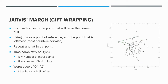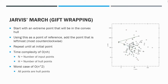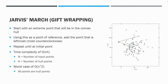For Jarvis's March, you're going to start with an extreme point that will be in the convex hull — in the GIF on the right, it starts with the leftmost point. Using this point as the reference, you add the point that is most counterclockwise from it, and you repeat that until you return to the initial point. Overall, this algorithm has a time complexity of O(n·h), where n is the number of input points and h is the number of hull points, because for each hull point you compare against all data points to find the most counterclockwise one. In the worst case, if all data points are hull points, you get a time complexity of O(n²).